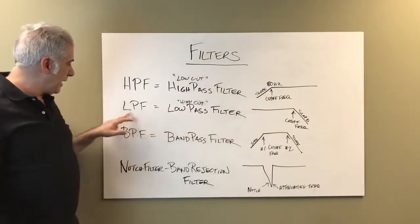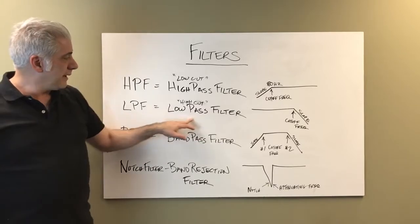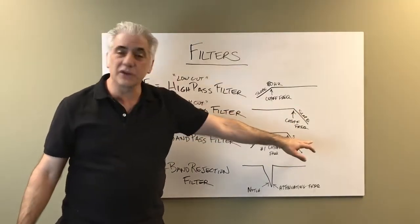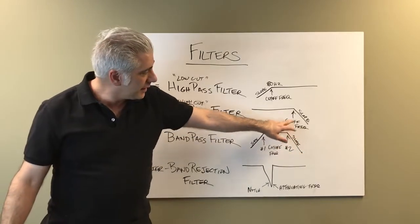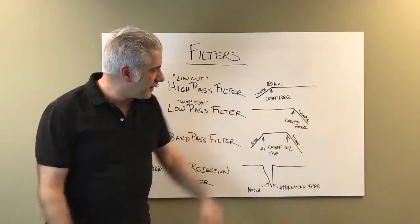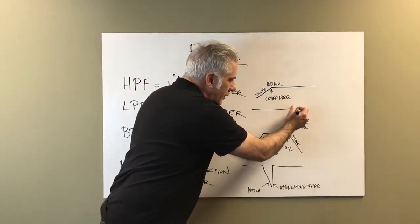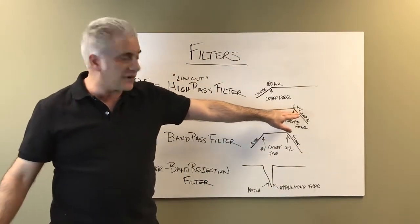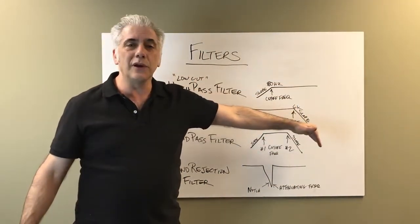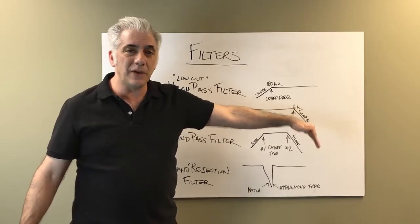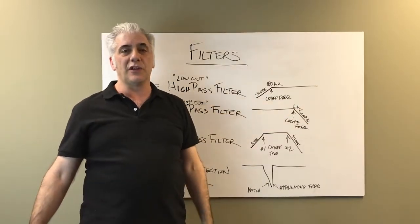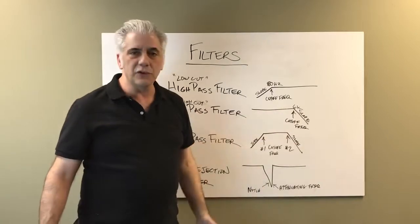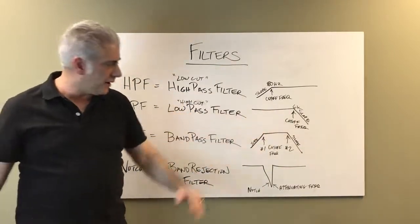The low-pass filter, LPF, is really a high cut — the slope goes down, cutting off high frequencies. If the cutoff frequency is set at 6k, anything above 6k will roll off at either minus 12 dB or minus 24 dB slope, depending on your choosing.